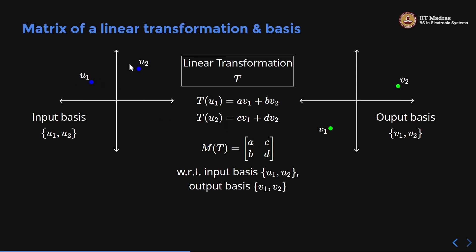What does that mean? u1, u2 is the input basis and v1, v2 is the output basis. Any input I have, I write as a linear combination of u1, u2. So t(u1) will be some vector written as a linear combination of v1, v2 — say t(u1) = a·v1 + b·v2, and t(u2) = c·v1 + d·v2. Then the matrix m(t) is [a b; c d], but now with respect to input basis u1, u2 and output basis v1, v2.